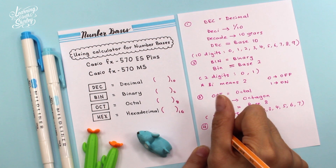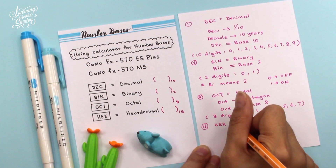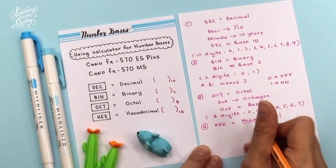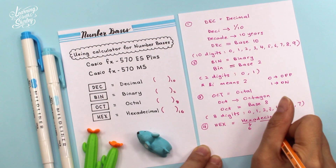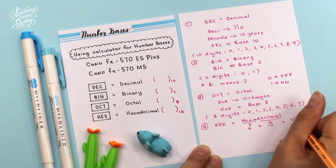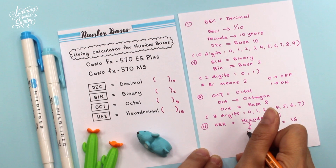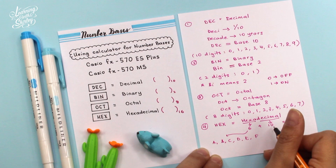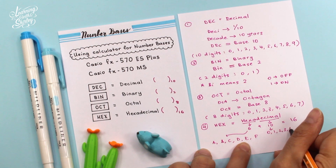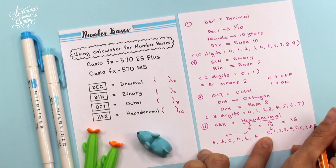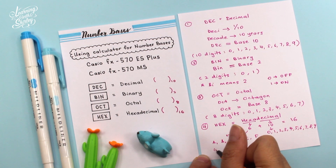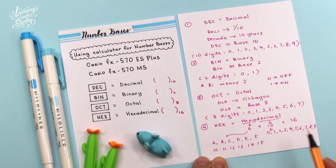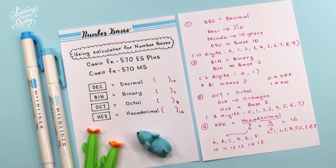And lastly is HEX, which stands for hexadecimal. 'Hexa' means 6 and 'decimal' means 10, so the total is 16 — that's why it's base 16. The extra 6 digits are A, B, C, D, E, and F, whereas the base 10 digits are 0 through 9, and then we continue with 10, 11, 12, 13, 14, and 15. So these are the 4 important buttons for number basis in the calculator.